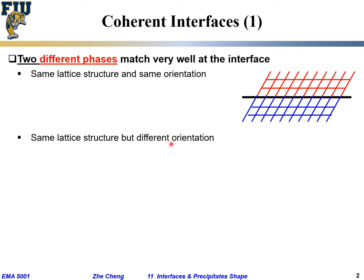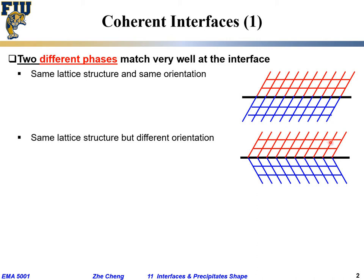We may have another scenario where we have the same lattice structure but a different orientation between the two phases meeting at the interface — something like this, same lattice structure but different orientation, but still matching pretty well at the interface. This is similar to the case of a twinning boundary, except that in a twinning boundary, each side is the same type of material, while here each side is a different material. They share the same lattice structure but the orientation is different.